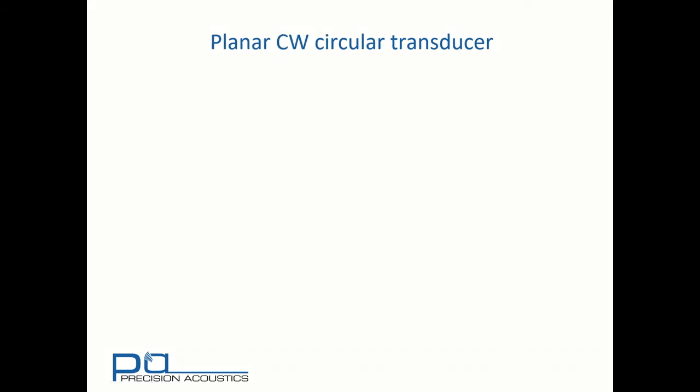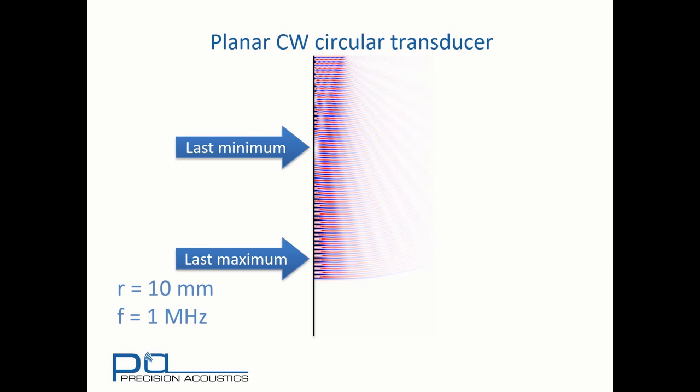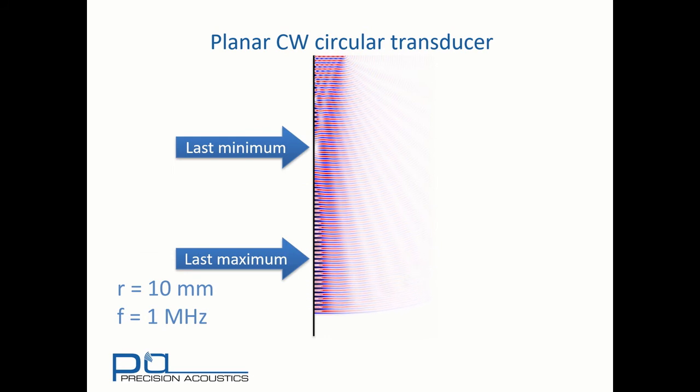In contrast with the previous case we'll now drive the same transducer with a continuous sinusoid. Therefore radius remains 10 millimetres and frequency 1 megahertz. We can see numerous edge and plate wave components. But because they're much longer signal durations there's far more opportunity for their interference and we see numerous on axis, axial, maxima and minima.